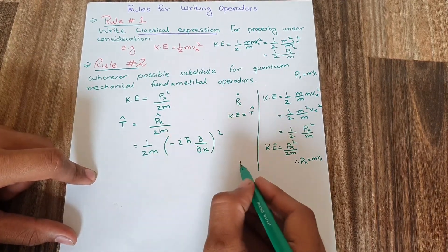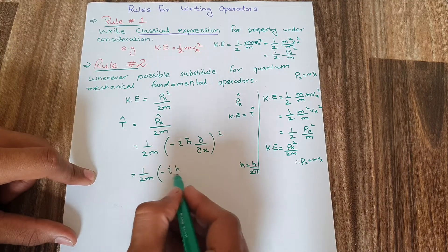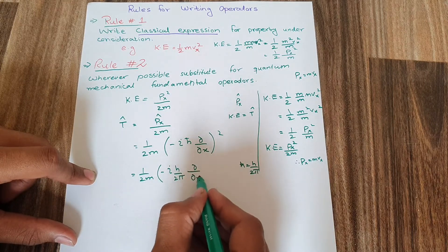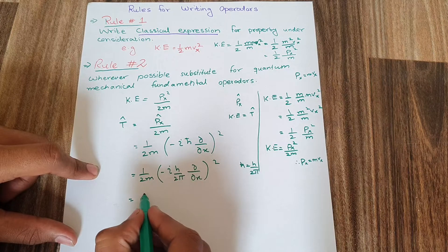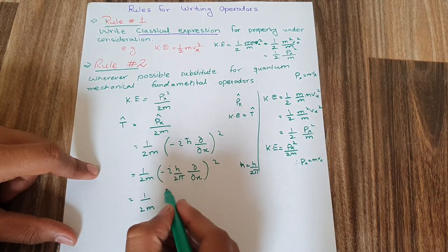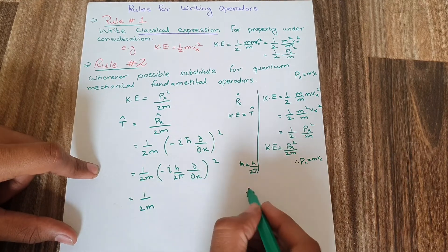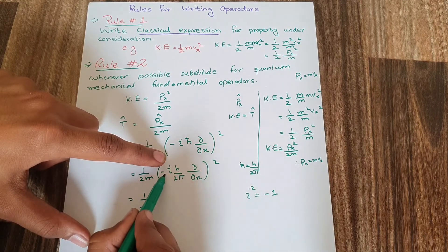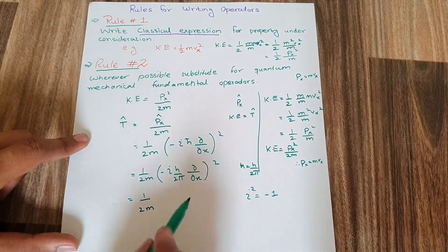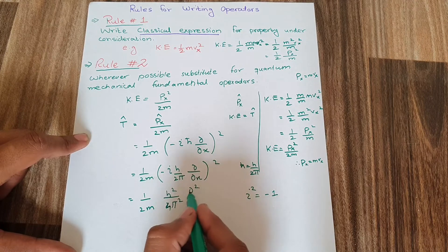Here h-bar has the value h over 2 pi. Substituting this h-bar value, I get 1 over 2m times minus iota h over 2 pi, partial derivative with respect to x, whole squared. The square of iota equals minus 1, so iota squared gives minus 1. This minus 1 multiplies with the existing minus sign and the two negatives cancel, giving a positive result.